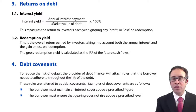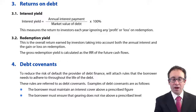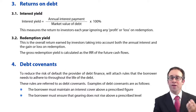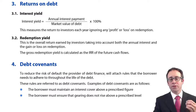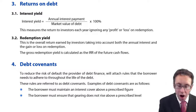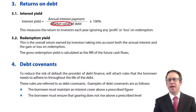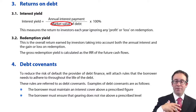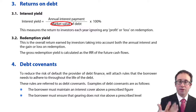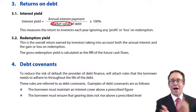Let's look at the returns on debt first. The return is the amount of money that you get back from the investor's perspective. There are two things we can look at. First, the interest yield, which is straightforward: we look at the annual interest payment divided by the market value of the debt. This brings about an inverse relationship — if the market value of the debt falls, then the interest yield will go up, and vice versa.